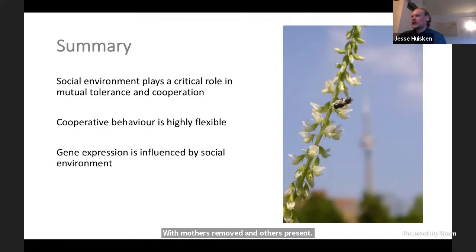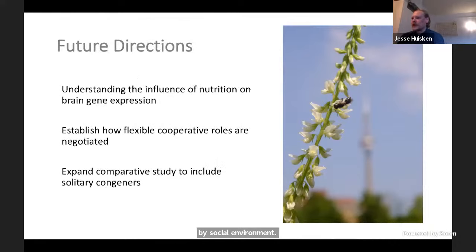To summarize, social environment does play a critical role in mutual tolerance and cooperation. We saw significant effects on behavior and gene expression. We found that cooperative behavior is also highly flexible, so regular daughters will take on a foraging role. And we found that gene expression is influenced by social environment. For future directions, I'd like to understand the influence of nutrition alone on brain gene expression before any social behaviors have emerged between adults, before adult eclosure. I'd also like to establish how flexible cooperative roles are negotiated among size-matched individuals and expand this study to compare with closely related species of Ceratina who are solitary.